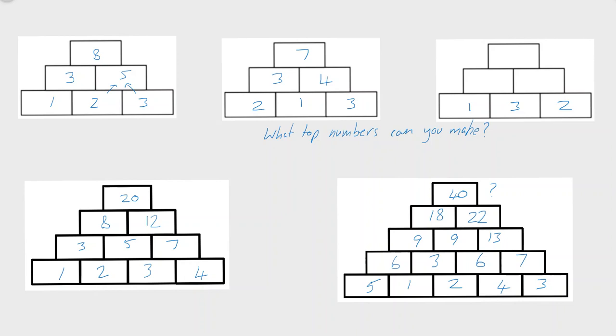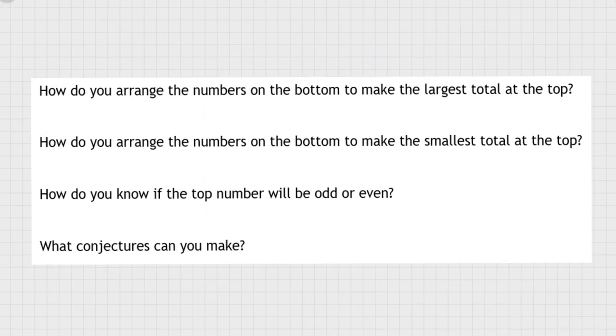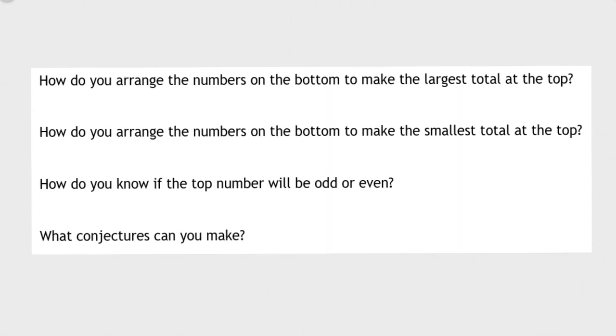That's the activity I'd like you to work on, thinking about these questions: How do you arrange the numbers on the bottom to make the largest total at the top? How do you arrange them to make the smallest total? How do you know if the top number will be odd or even? It's an interesting one. What conjectures can you make? That's the activity to start with number pyramids.